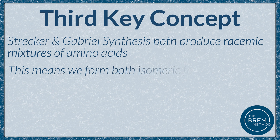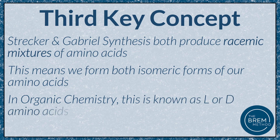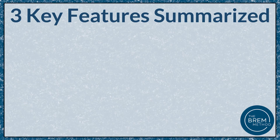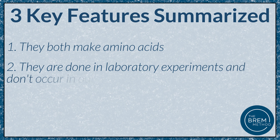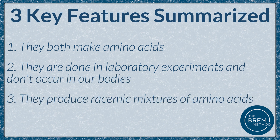That means we form both isomeric forms of our amino acids. In organic chemistry, we call these L or D amino acids. In our bodies, we use exclusively L amino acids, so if we're going to use these amino acids to build proteins that go into humans, we've got to isolate only the L form produced by Strecker or Gabriel synthesis. We can do this with a lab technique like affinity chromatography that can bind to only one isomeric form of each amino acid. Both reactions make amino acids, usually in laboratory experiments and not in our body, and they produce racemic mixtures.